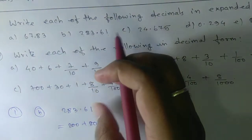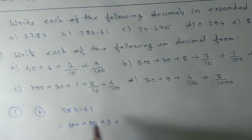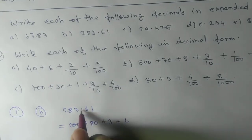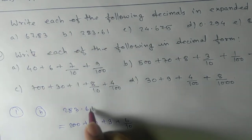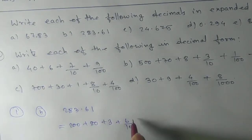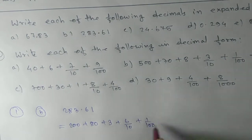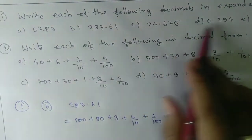Whatever number you will take after the point - 6 is the first one. We have learned this is in the tenths place digit, that means 6 by 10. This is in the hundredths place digit, that means 1 by 100. This is your answer.